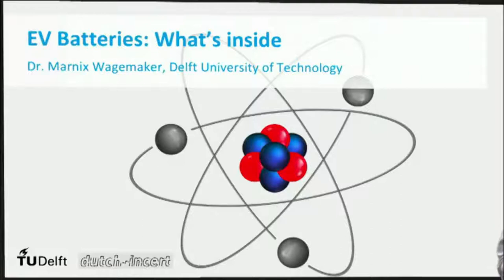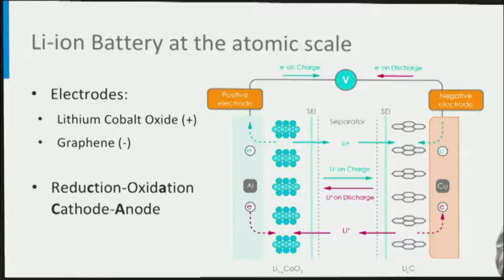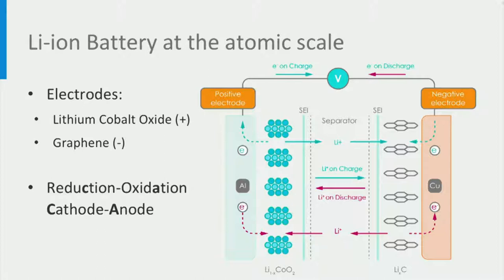Let's consider the atomic scale working of a lithium-ion battery by looking at the classical combination of a graphite negative electrode with a positive lithium cobalt oxide, or LCO, positive electrode, as commercialized in 1991. Lithium can be stored between the graphene layers in graphite and in the interlayers of the cobalt oxide host, or LCO for short.